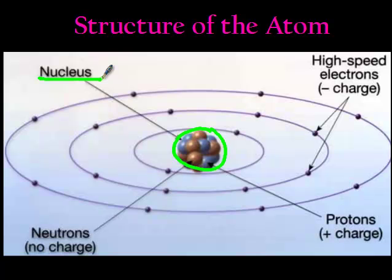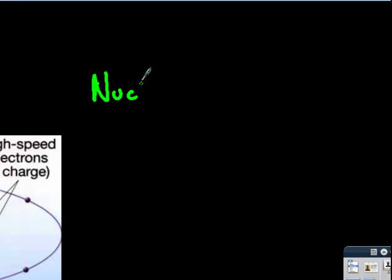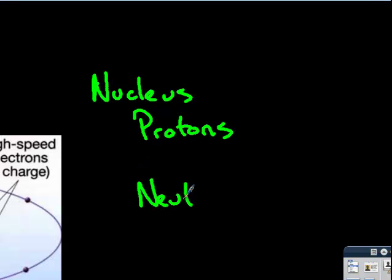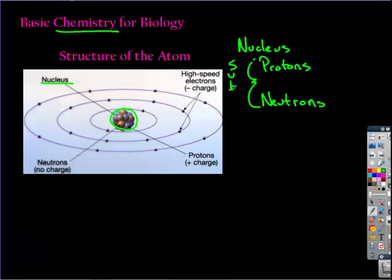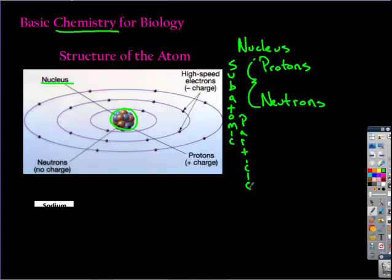Now the nucleus of the atom contains protons and neutrons. The general word for the things we're talking about are subatomic particles.